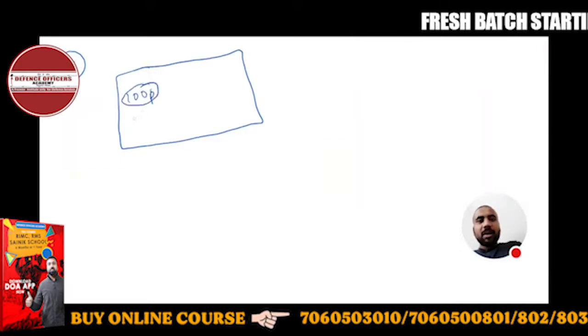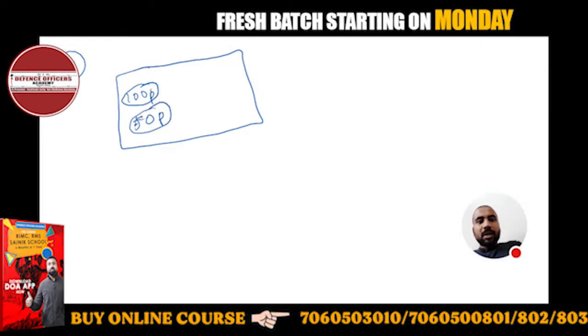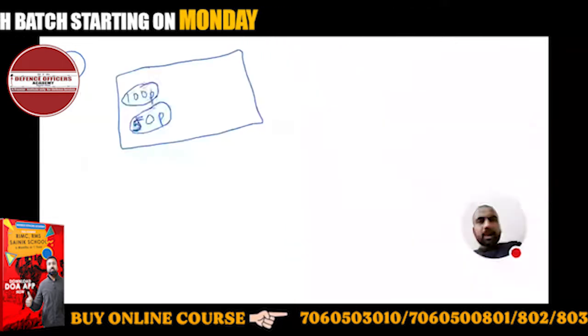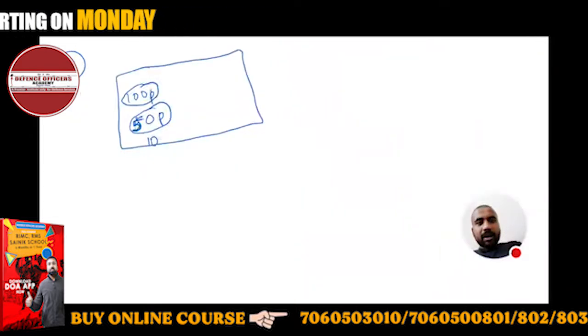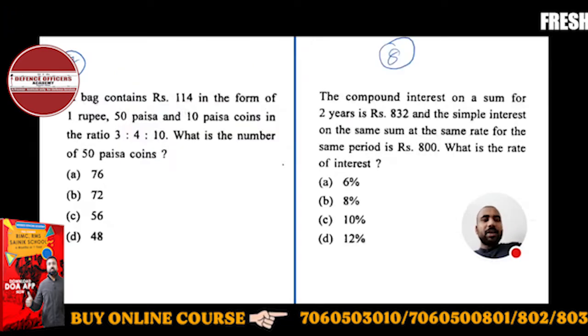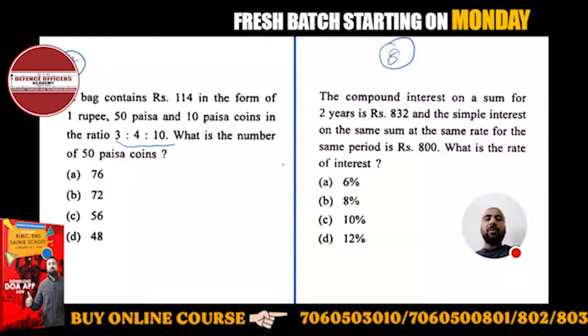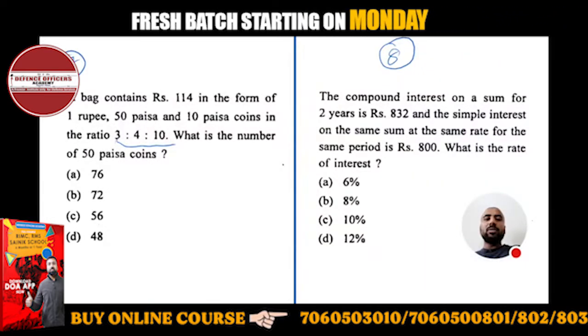There is 100 paisa coin, 50 paisa coin, and 10 paisa coin. And they are in the ratio 3 is to 4 is to 10. So when you will take common multiple, 100 paisa ke coins will be 3x.